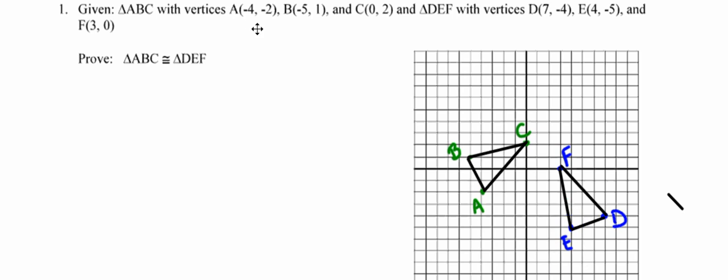At this point, I'm looking at those, trying to say to myself, is there some sequence of rigid motions that I can use to map one triangle onto the other? Because if there is, then I'm going to be done. However, I'm not seeing a sequence of rigid motions that will map one triangle onto the other. So I said, okay, I tried that. It didn't work. I've got to find a different way.